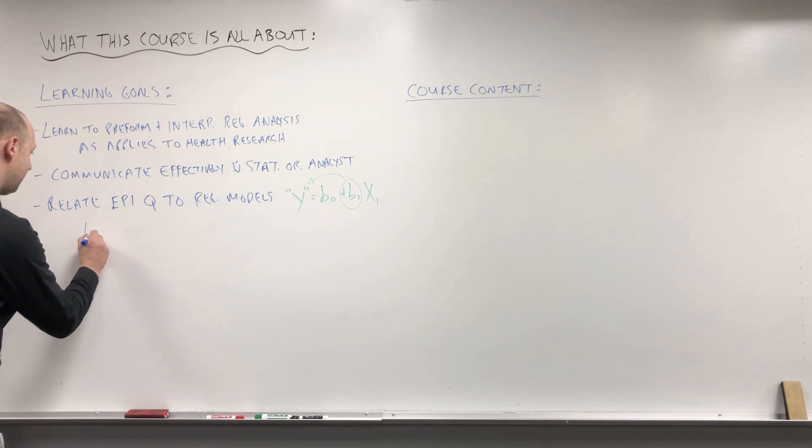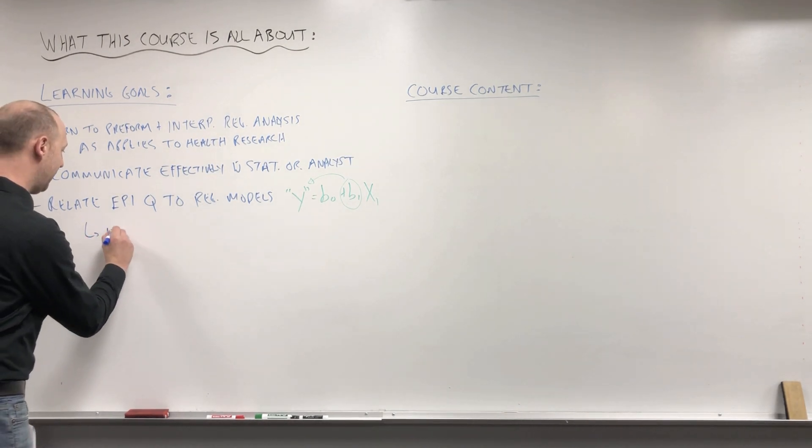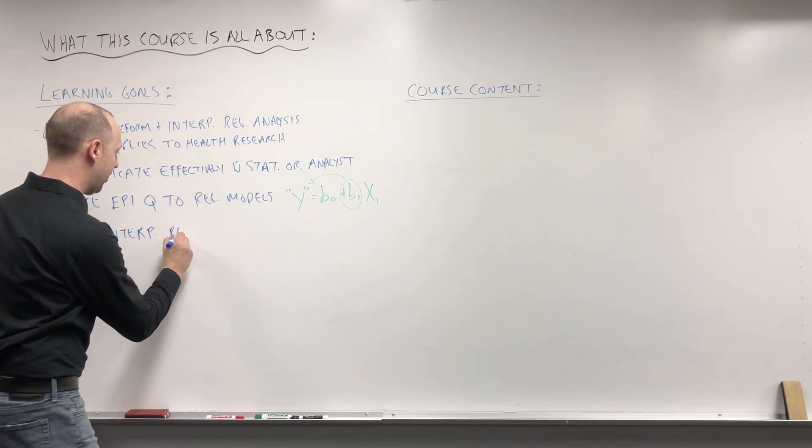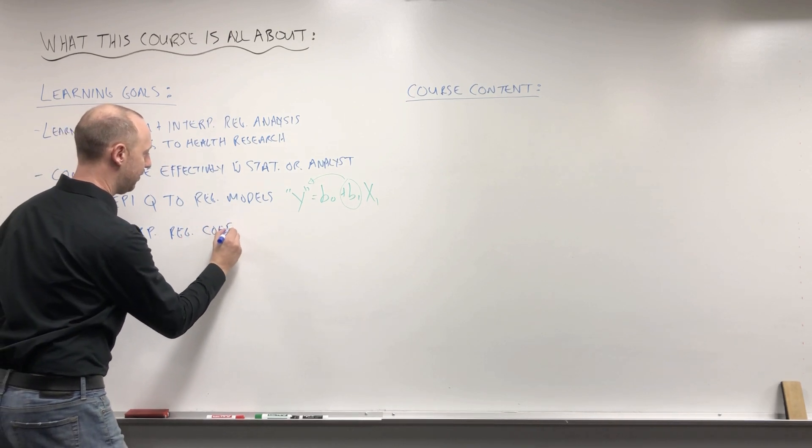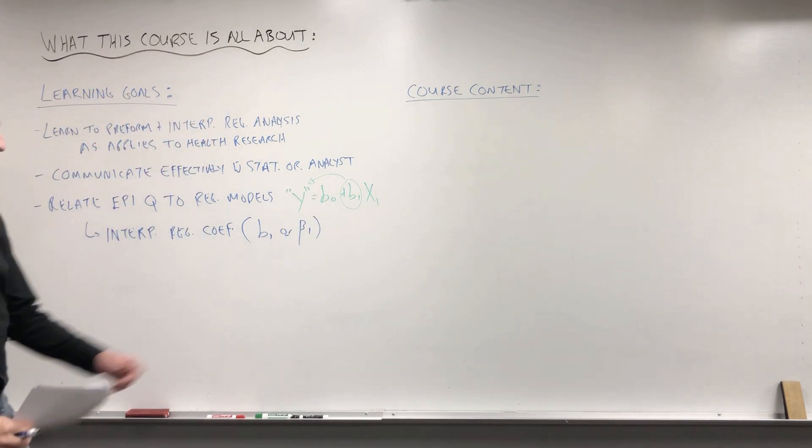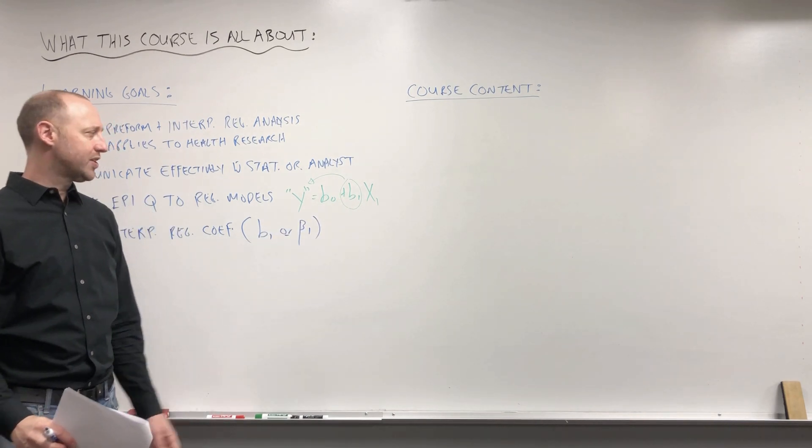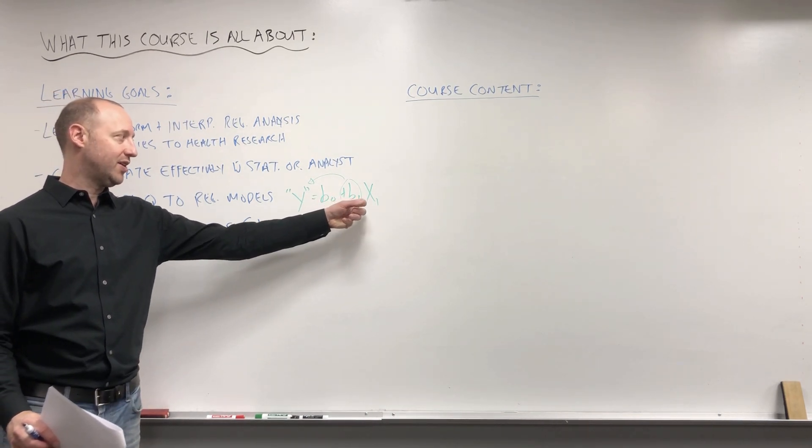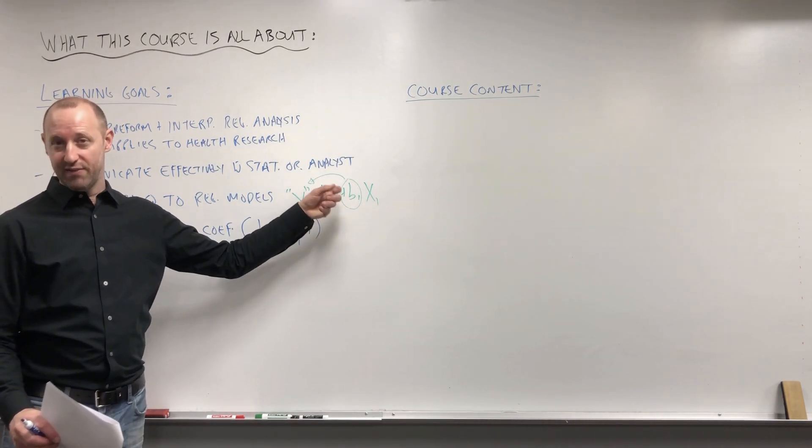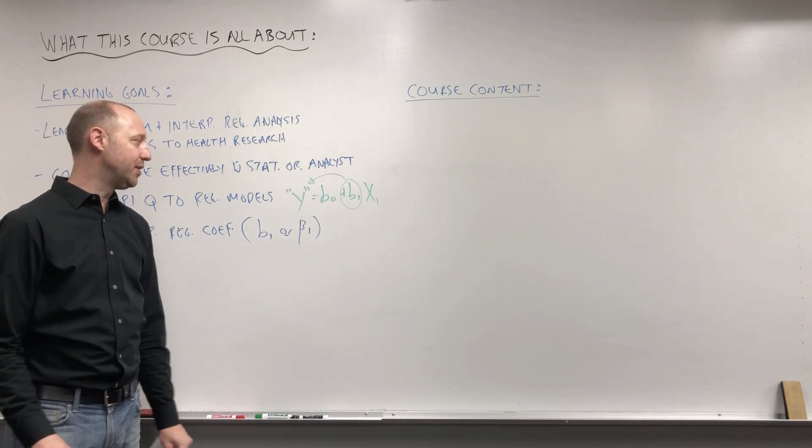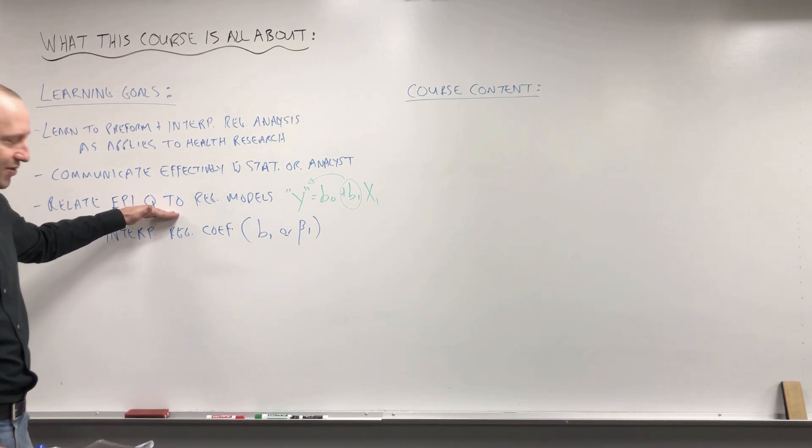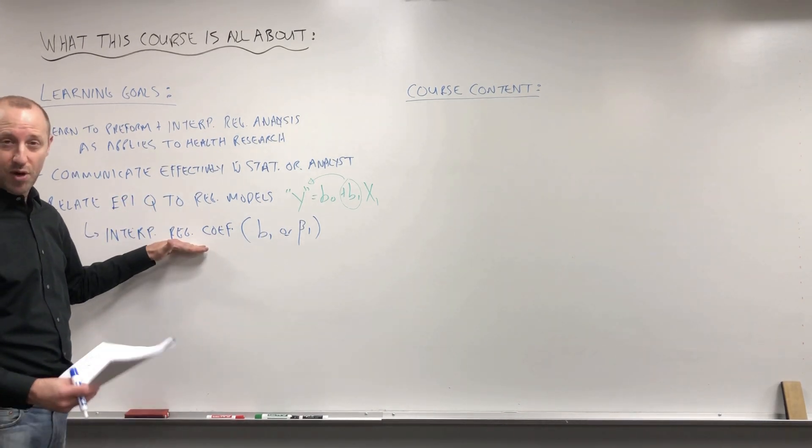On a related note, we want to learn to interpret the regression coefficients - these b values or the true values beta. What are the interpretations of these coefficients? We're going to start to see that in general they tell us the effect of some variable on the outcome. When we look at logistic regression, exponentiating these is going to give us odds ratios, which is something we learned about in the previous course. So how do we fit the models to help us answer a question and how do we interpret the model coefficients?